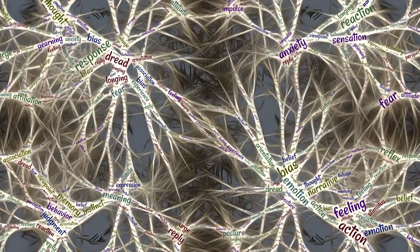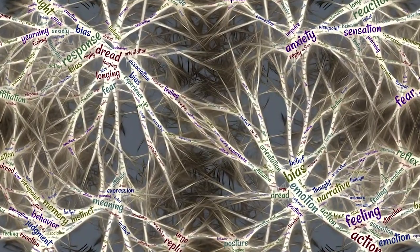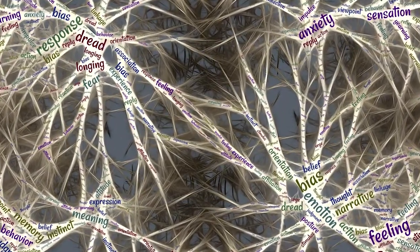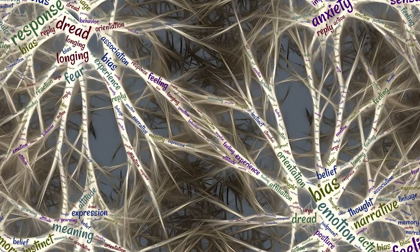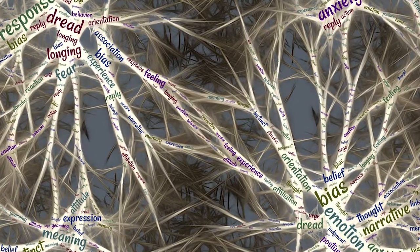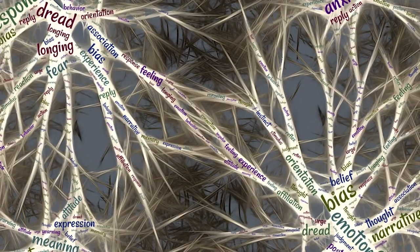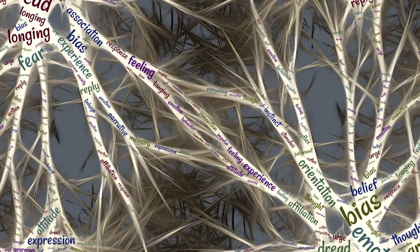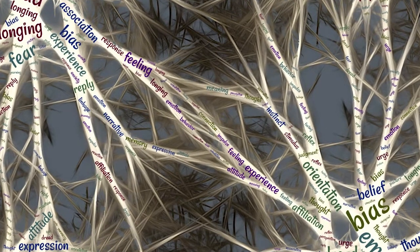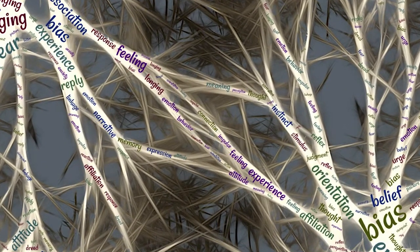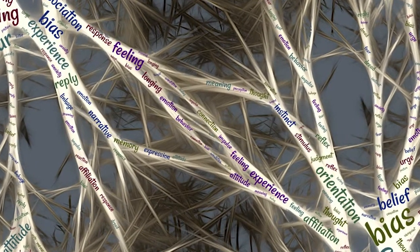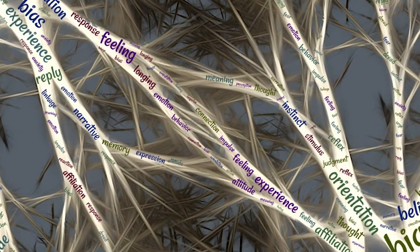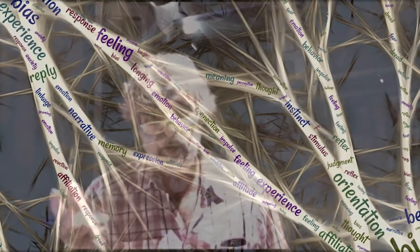Neuroscience today is able to explain what an emotion is, to explain how emotion works, to explain its role, to classify emotions, and to identify which perceptual aspects are able to trigger them.